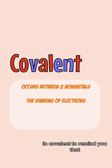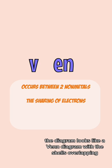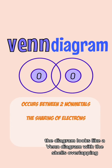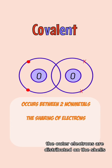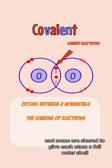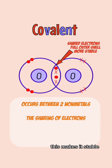Use the VEN in covalent to remind you that the diagram looks like a Venn diagram with the shells overlapping. The outer electrons are distributed on the shells and some are shared to give each atom a full outer shell. This makes it stable.